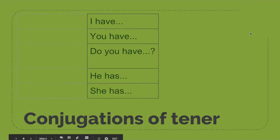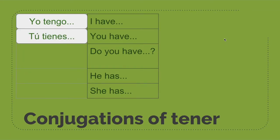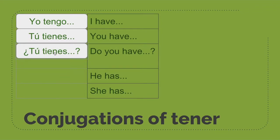So we said I have is yo tengo, you have is tú tienes. And now we're going to look at do you have, which is still tú tienes. We're just going to change the inflection and add some different punctuation. Let's take a look at these.